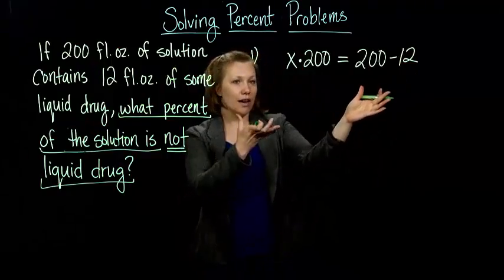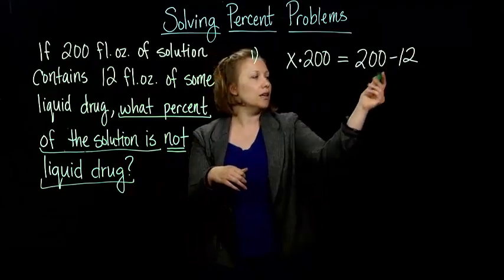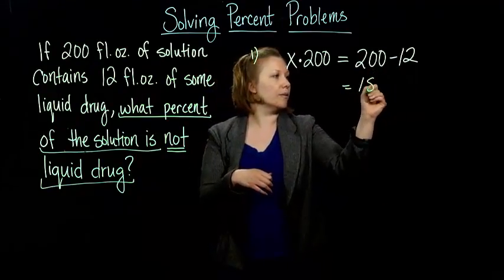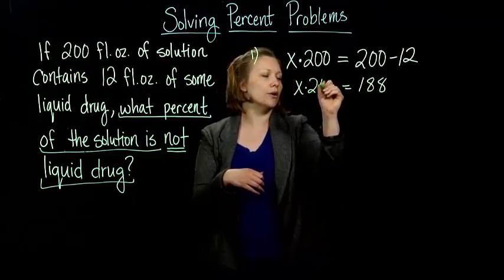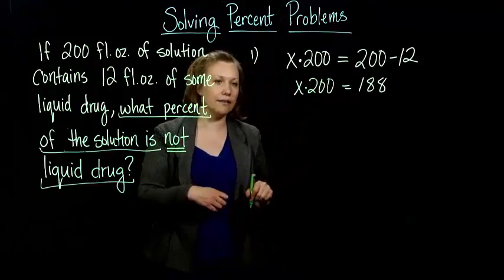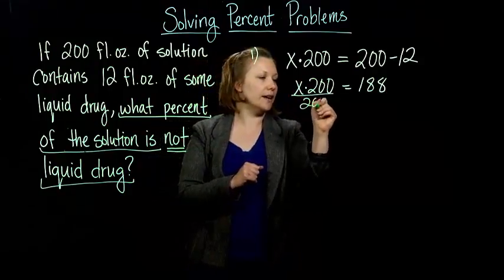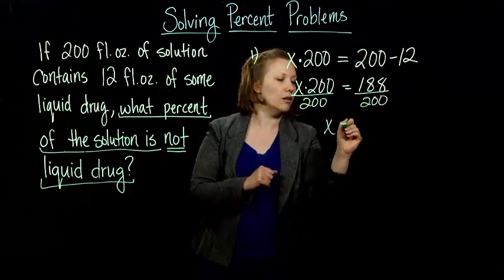So now we have our equation set up. All we have to do now is solve it. So the first thing I'm going to do is 200 minus 12 gives me my 188. So I still have x times 200, or you could write it as 200x if you like that better. And so now I just have to solve this for x. I'm going to do that by dividing by 200 on both sides.